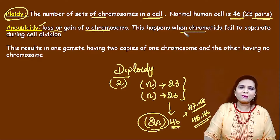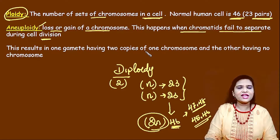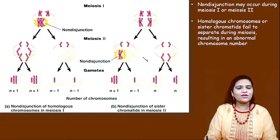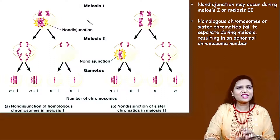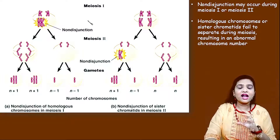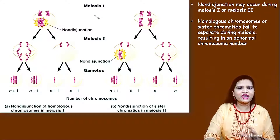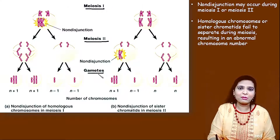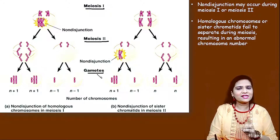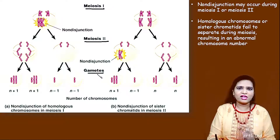Why does this happen? This happens when the chromatids fail to separate during cell division. This shows exactly when chromosomal abnormalities occur in a cell. Cell division occurs in meiotic 1 and meiotic 2 stages, after which gametes are formed. At these two stages, chromosomal abnormalities can occur.